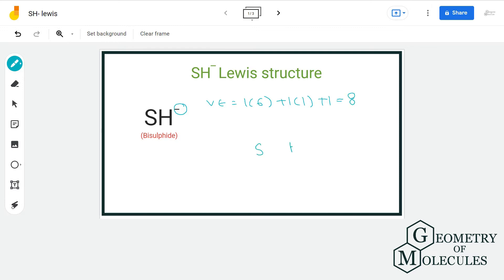We will place an electron pair between sulfur and hydrogen for bond formation and assign the remaining six electrons to sulfur. Also, SH⁻ is an ion, so we will enclose it within a bracket.